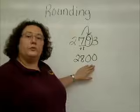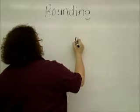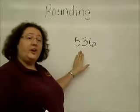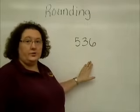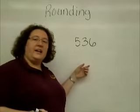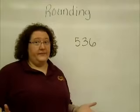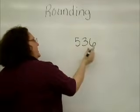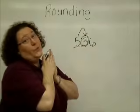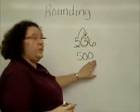Now I'm going to give you a couple for you to try. Round five hundred thirty-six to the nearest hundred. Pause the video, and when you think you have your answer, come back and we'll see if it matches. Ready? Ones, tens, hundreds. Right next door — three tells me to rest. So five hundred thirty-six is going to round to five hundred.